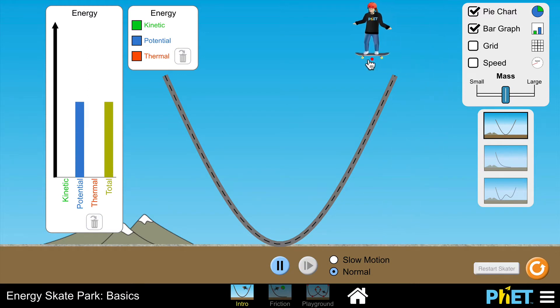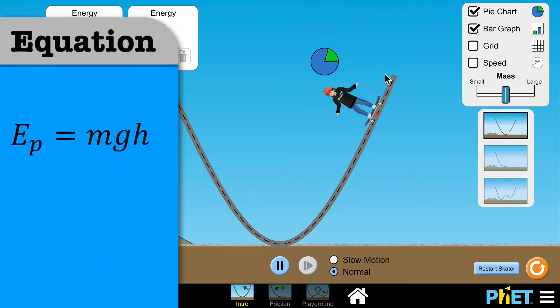If I lift them up you can see in the bar chart they're gaining potential energy. Remember potential energy EP is MGH. M is the mass, in this case the mass of the skater, G is gravitational field strength, 9.8 N per kilogram on Earth, and H is of course their height.